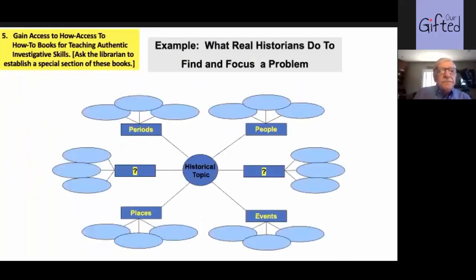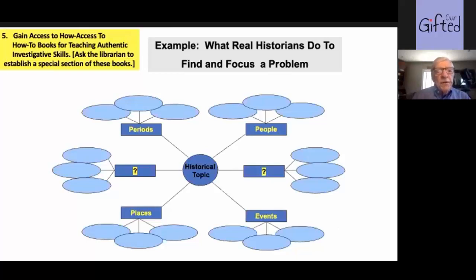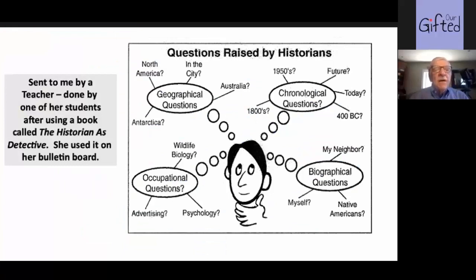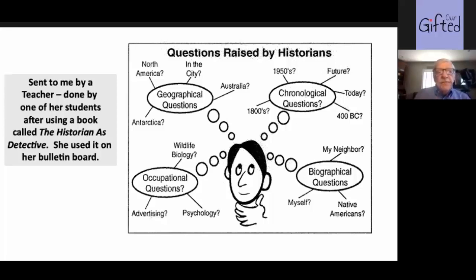Here again is one that a teacher sent me that she uses for brainstorming historical topics. She asks: are they interested in the people, the period, the events, the places, or any other thing? One group of kids was interested in women's fashion during the Civil War, and they were actually able to fill in that bubble. This is a bulletin board that one teacher sent me as well. The historian — she got the information from a how-to book called The Historian as Detective — and there you see some of the kinds of things that real-life historians actually do in their work.